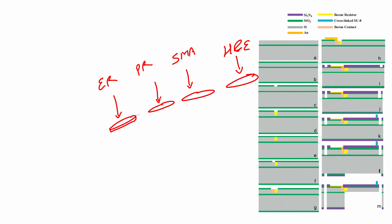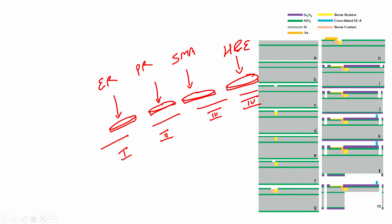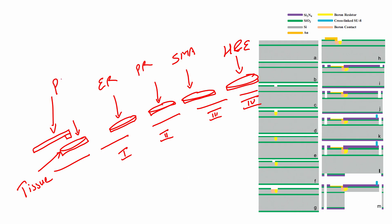Now, if I get slices of tissue — assuming all these slices 1, 2, 3, and 4 are uniform in terms of thickness — I take one more slice for my experiments, where I will take my piezo-resistive cantilever with a SU-8 tip and indent it on this particular tissue.